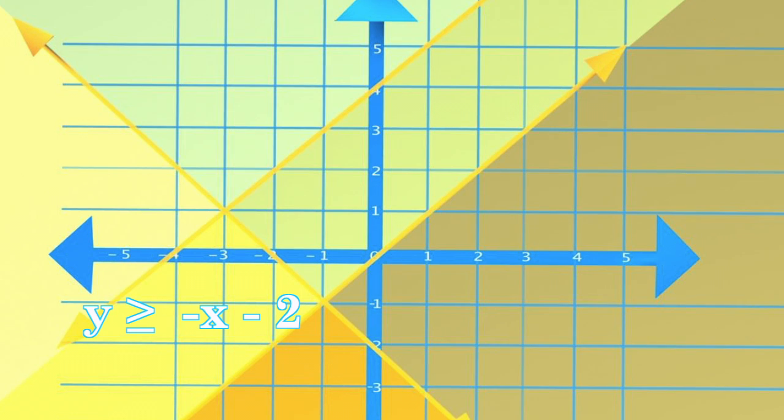Now let's add two more inequalities to the graph: y is greater than or equal to negative x minus 2, and y is less than or equal to negative x plus 4.